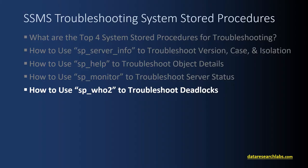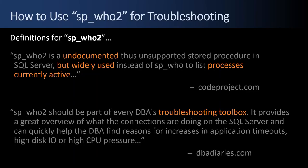Finally, my favorite that I use all the time: how to use SP_Who2 to troubleshoot deadlocks. SP_Who2 is undocumented — it's been around forever since version 6.5 of SQL Server in the 1990s — but it's widely used instead of SP_Who. It's used to list the processes that are currently active. As the DBA Diaries say, SP_Who2 should be a part of every DBA's troubleshooting toolbox. It's my favorite system stored procedure; I use it all the time for looking into deadlocking and blocking.